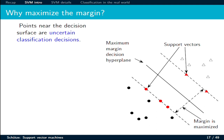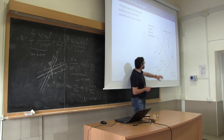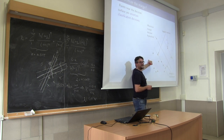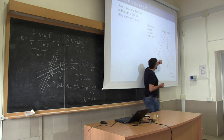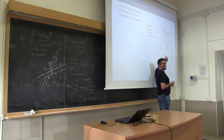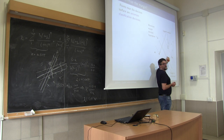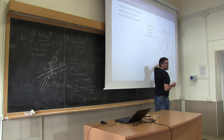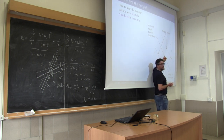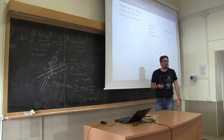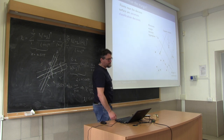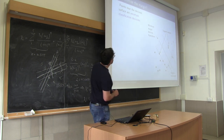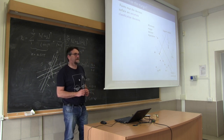Let's have a look at this picture. Are you more confident on the classification of the point that is here, or the point that is here? The idea is that the greater the distance of the point you want to classify to the decision region and hyperplane, the more confident you are about the right classification. Points that are near the decision surface are uncertain classification decisions — possibly because of overfitting.